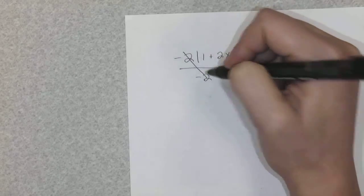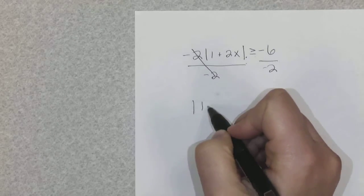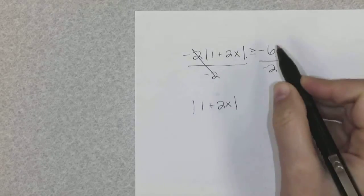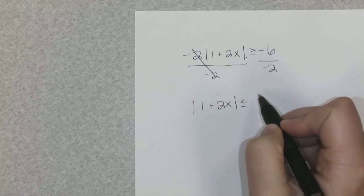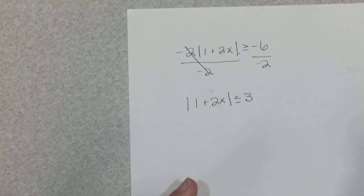You can never distribute through absolute value bars, so this is how I'm going to get rid of this. So this will cancel out and I'll just have absolute value of 1 plus 2x. Now I have to flip my sign, less than or equal to 3. Now at this point you can just split up your inequality.